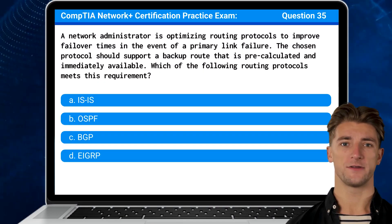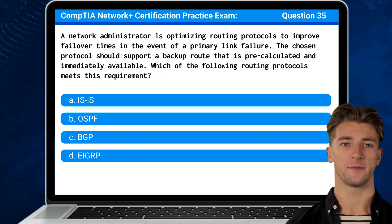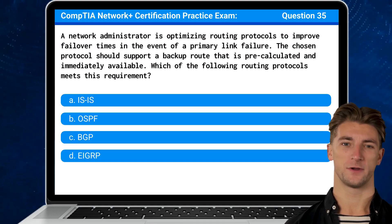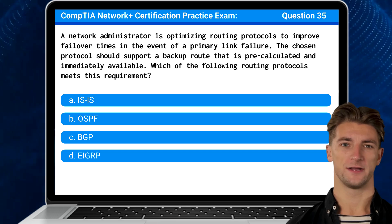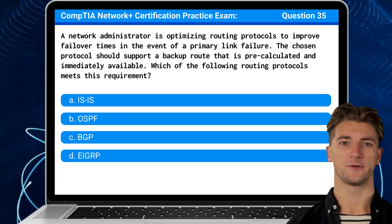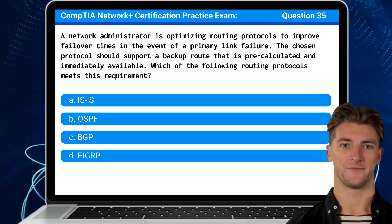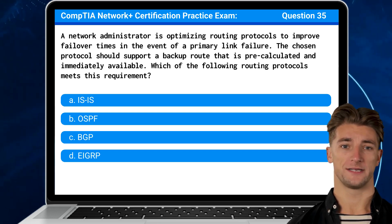Question 35: A network administrator is optimizing routing protocols to improve failover times in the event of a primary link failure. The chosen protocol should support a backup route that is pre-calculated and immediately available. Which of the following routing protocols meets this requirement?